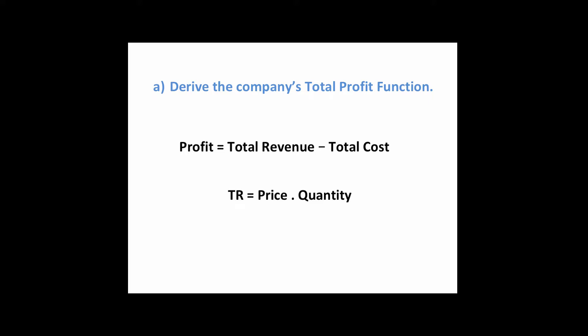Firstly, what you need to know is the formula or the relationship for total profit. That's equal to total revenue minus total cost. Total revenue, remember, is your sales. Within that formula, we need to know what total revenue is because in the exam question, total revenue was not given to you. Knowing the total revenue formula — price by quantity — will help us achieve the derivation of the total profit function.